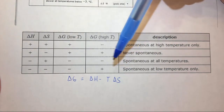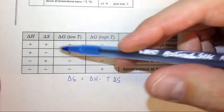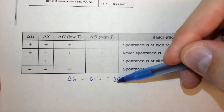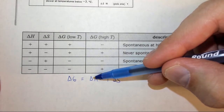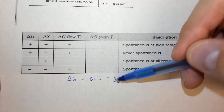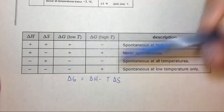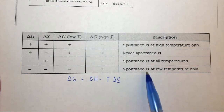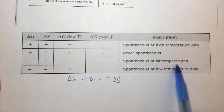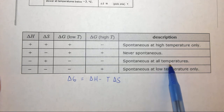Let's look at the next case. If delta H is negative and delta S is positive, this will be negative and it'll be minus a positive — so a negative minus a positive, which will always be negative. This is going to be spontaneous at all temperatures; it's independent of the temperature.